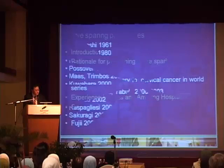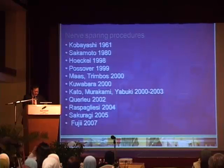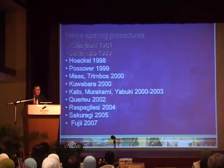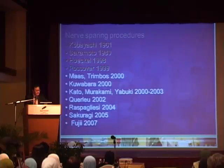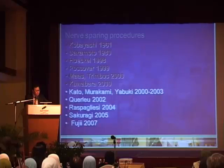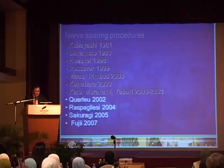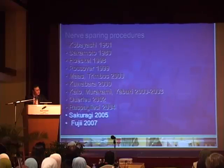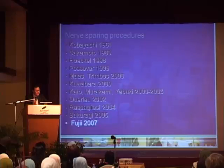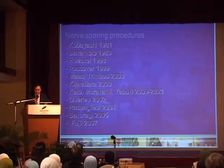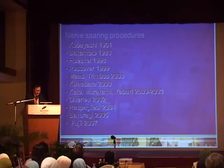In the world literature regarding nerve-sparing surgeries, it was initially documented by Kobayashi in 1961, by Sakamoto in 1980, Höckel from Germany in 1998, Possover in 1999, Maas and Trimbos in Netherlands in 2000, Kuwabara in 2000, Tato, Murakami, and Yabuki in 2000–2003. You can see there are quite a lot of Japanese authors on this surgery. Then Querleu from France in 2002, Raspagliesi in 2004, then back to Japanese — Sakuragi in 2005 — and we actually adopted this technique from Shingo-Fujii in 2007–2008.